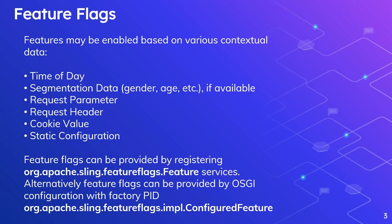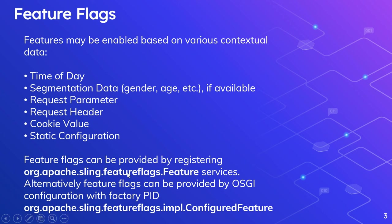Features may be enabled based on various contextual data — some of them are time of the day, segmentation data, gender, age, etc. If available: request parameters, request headers, cookie values, and static configuration. Feature flags can be provided by registering a service like org.apache.sling.featureflags.feature.